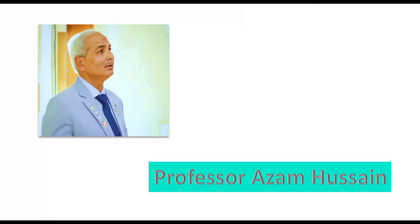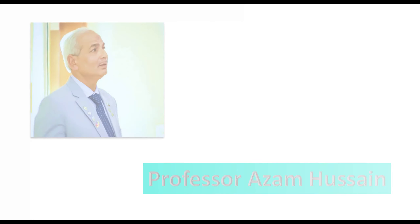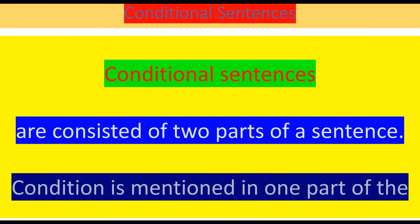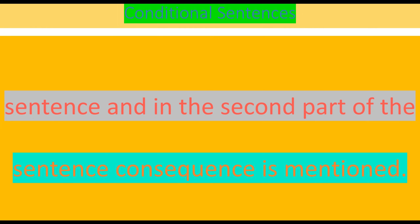I am Professor Azam Hussain and today we are going to learn about conditional sentences. Conditional sentences are consisted of two parts: condition is mentioned in one part of the sentence and in the second part, consequence, outcome or result is mentioned.